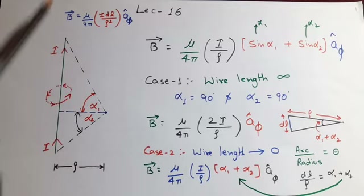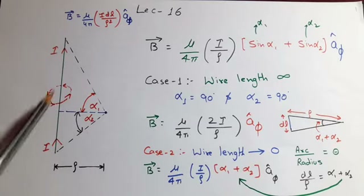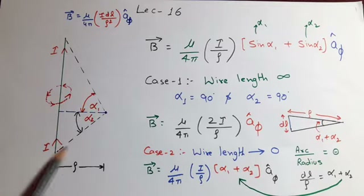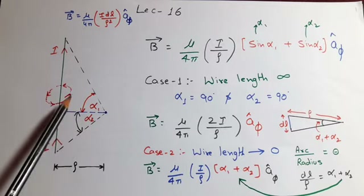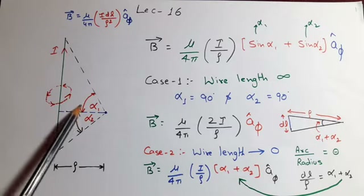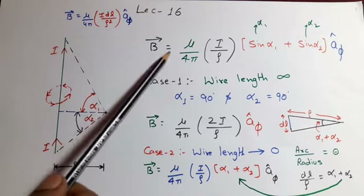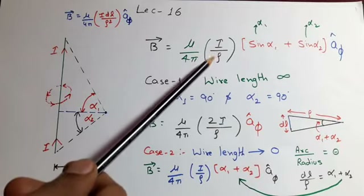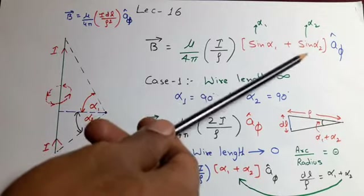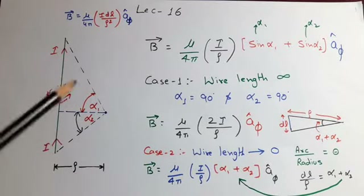If the current carrying wire is of infinite length, then this dependency can be omitted. But in this case the current carrying length is finite, and suppose the point is situated here. If we connect this point with the end points of the wire, and suppose this is the perpendicular distance, then the magnetic flux density will depend upon two angles alpha 1 and alpha 2, which are made by the point with the ends of the current carrying element respectively. The expression for B is equal to mu upon 4 pi into i upon rho, into sin alpha 1 plus sin alpha 2. If we are using a cylindrical coordinate system, we need not use a cross product to define the direction of B; the direction of B will be in the phi direction — phi means around the wire.